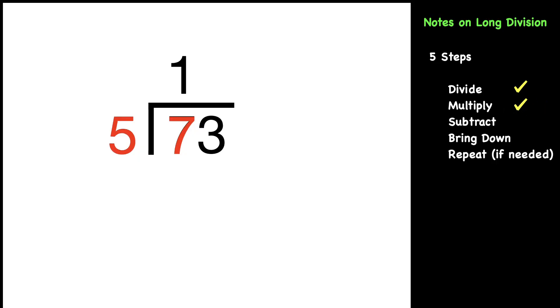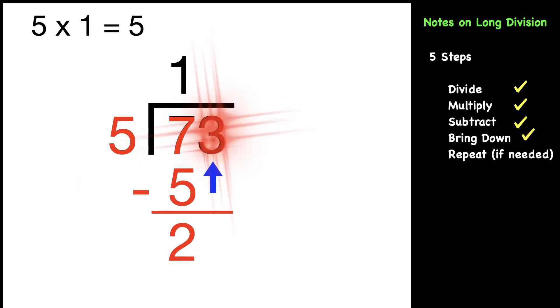Now we multiply our divisor times the quotient. Five times one equals five, and we put that underneath the seven. We subtract to find the difference. Seven minus five is two. Now we have the three, and we want to bring that down to make 23.